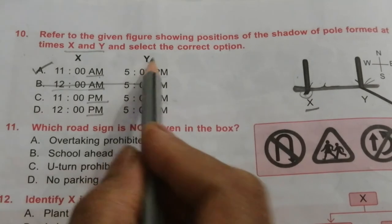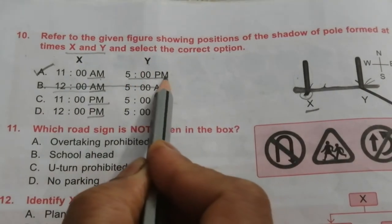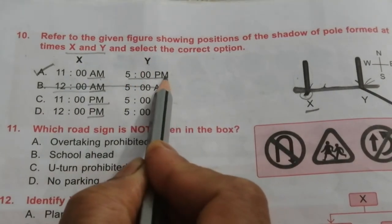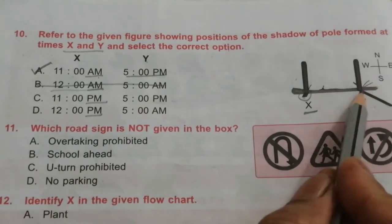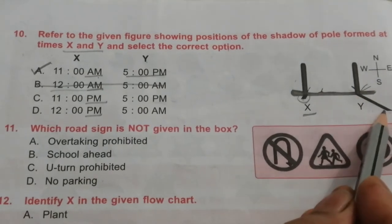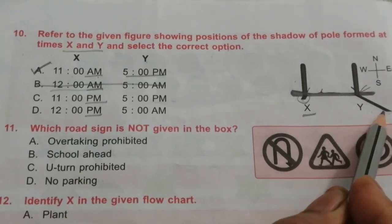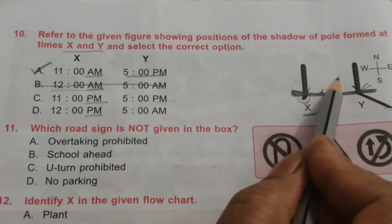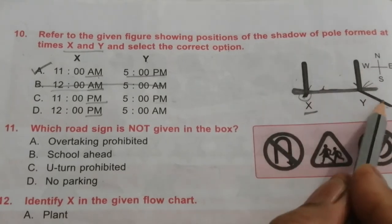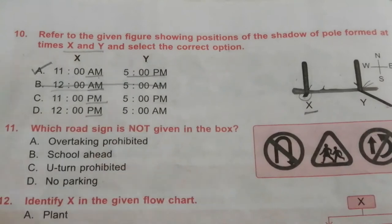For time Y, the answer is 5 PM — evening time. The shadow is in the east direction because during evening the sun is in the west, so shadows fall in the east direction.